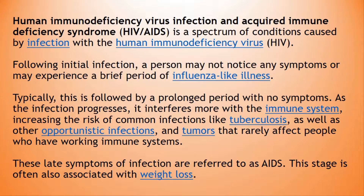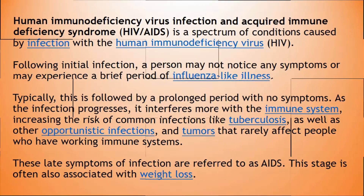it interferes more with the immune system, increasing the risk of common infections like tuberculosis as well as other opportunistic infections and tumours that rarely affect people who have working immune systems. These late symptoms of infection are referred to as AIDS. This stage is often also associated with weight loss.